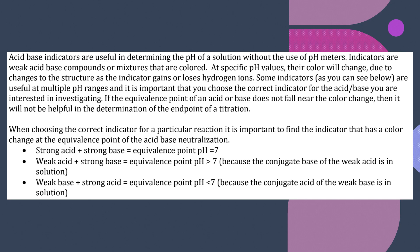When choosing the correct indicator for a particular reaction, it is important to find the indicator that has a color change at the equivalence point of the acid-base neutralization. If you have a strong base and a strong acid, you need an indicator that has a color change at pH 7. If you have a weak acid and a strong base, the conjugate base is in solution, so you'll end up with a pH greater than 7. For a weak base and strong acid, your equivalence point will be pH less than 7 because you have the conjugate acid in solution.